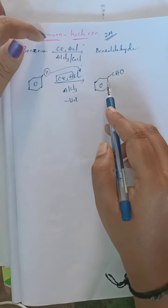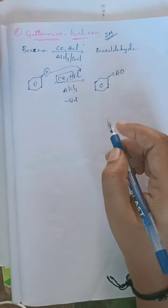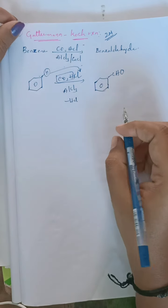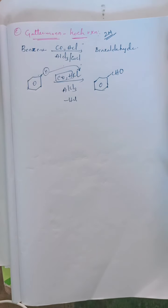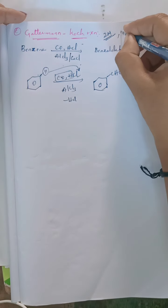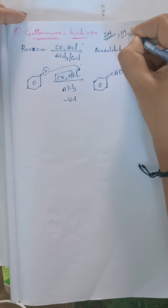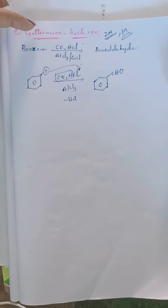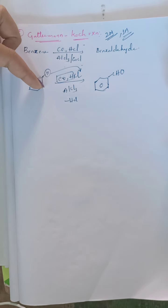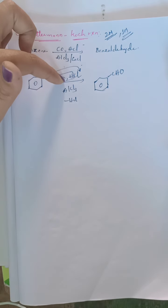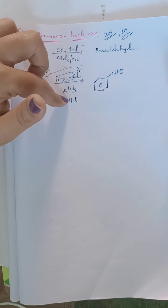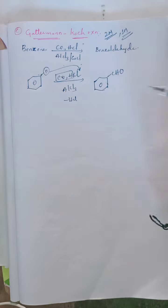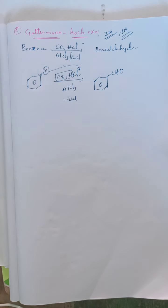This method is known as the Gattermann-Koch reaction — very important for one or two marks. In the Gattermann-Koch reaction, benzene reacts with carbon monoxide and HCl in the presence of AlCl₃ to give benzaldehyde.